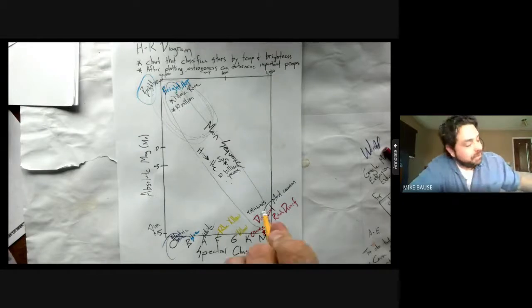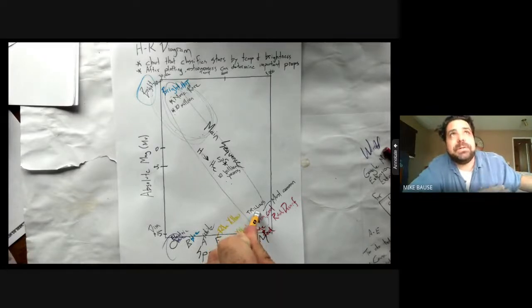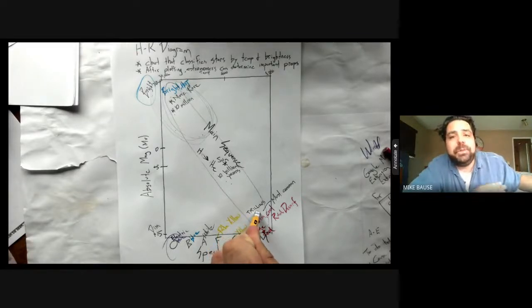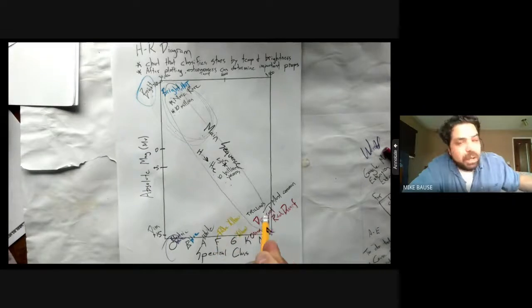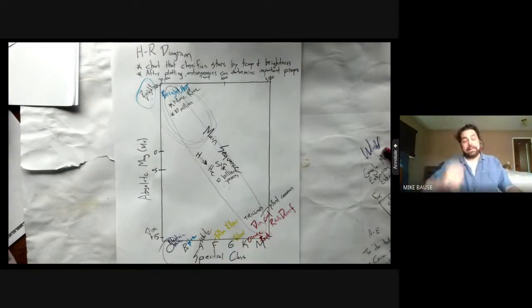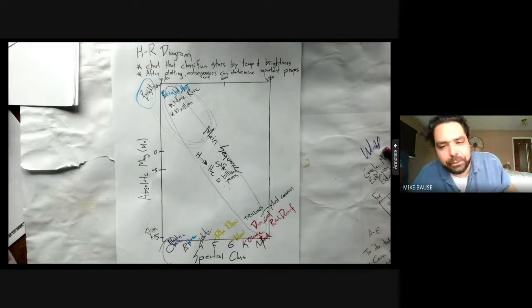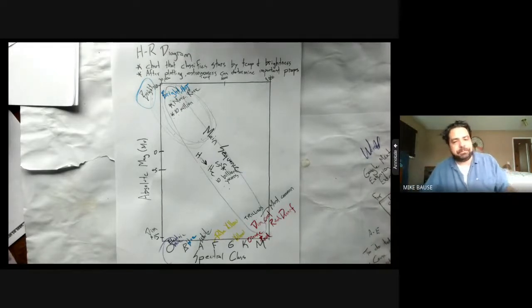These stars, every single one of them that's ever formed, every single one that's ever formed since the birth of the universe, they all still exist today. That's crazy talk to me. I just find that mind-blowing. So anyways, those red dwarfs are an interesting group of the HR diagram here.